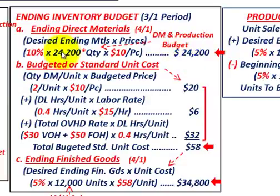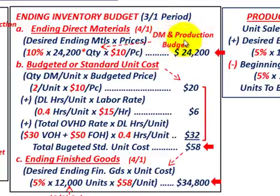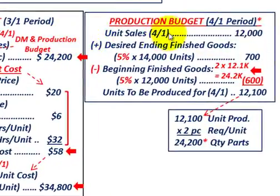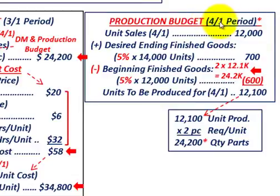Let's see how we calculated the 24,200 parts. We go to the production budget for the next period — April. We can get those numbers from our production budget. We're calculating for March but basing ending direct materials on April's needs.